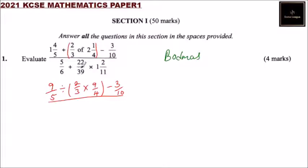Here, we are going to start with, we don't have brackets, we don't have 'of', we don't have division, we have multiplication. So we are going to write, this is 5 over 6, you say plus,